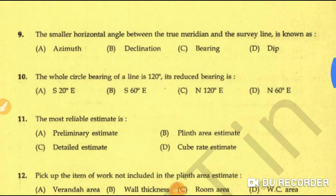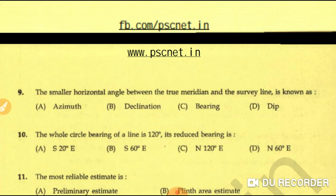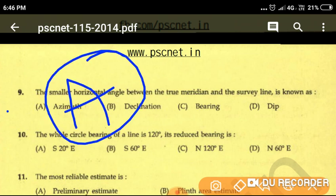Question number nine: the smaller horizontal angle between the true meridian and the survey line is known as — option A: azimuth, option B: declination, option C: bearing, option D: dip. The smaller horizontal angle between the true meridian and the survey line is known as azimuth. Note: the angle between the true meridian and magnetic meridian is declination. Option A is the correct answer.